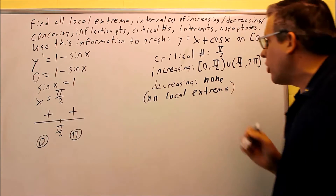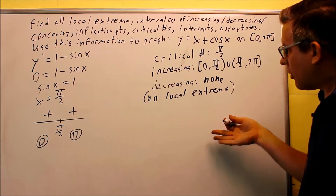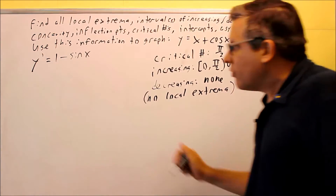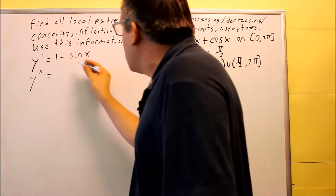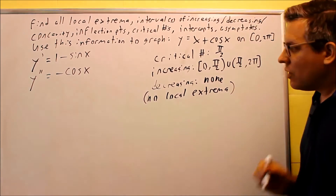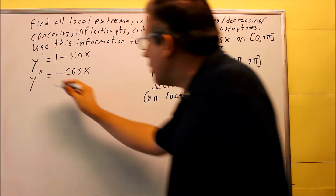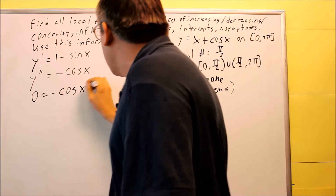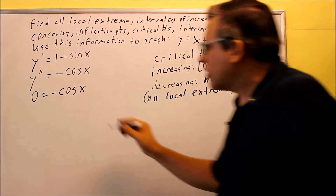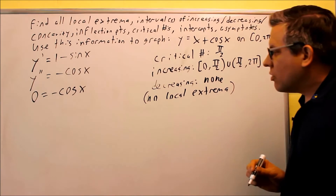That's all we can find from the first derivative. Now we move on to the second derivative. The derivative of 1 minus sine x gives us negative cosine x. This is not undefined anywhere, so we set it equal to 0. Dividing both sides by the negative, we get cosine x equals 0, and we look for angles between 0 and 2 pi where that occurs.